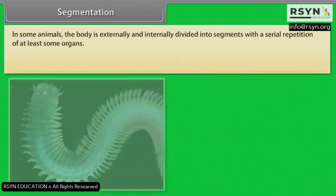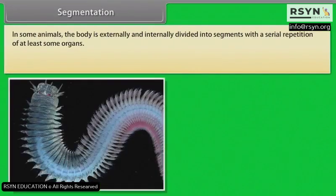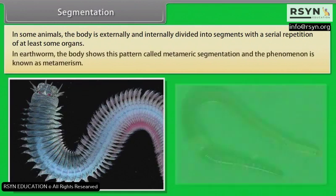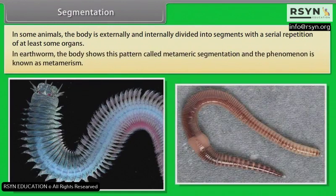In some animals, the body is externally and internally divided into segments with a serial repetition of at least some organs. In earthworm, the body shows this pattern called metameric segmentation and the phenomenon is known as metamerism.